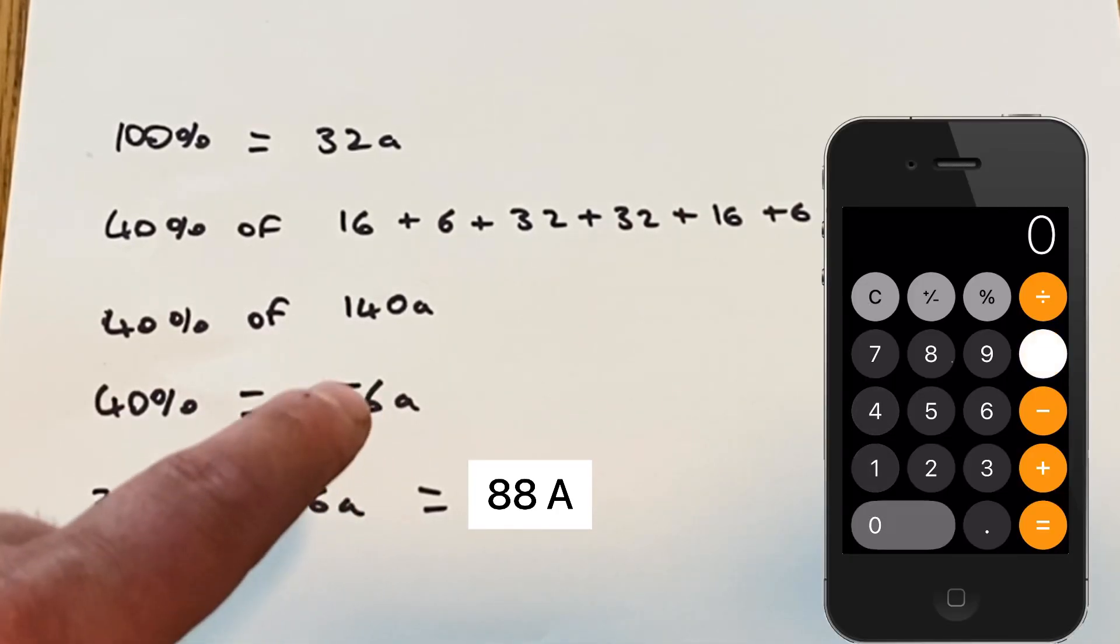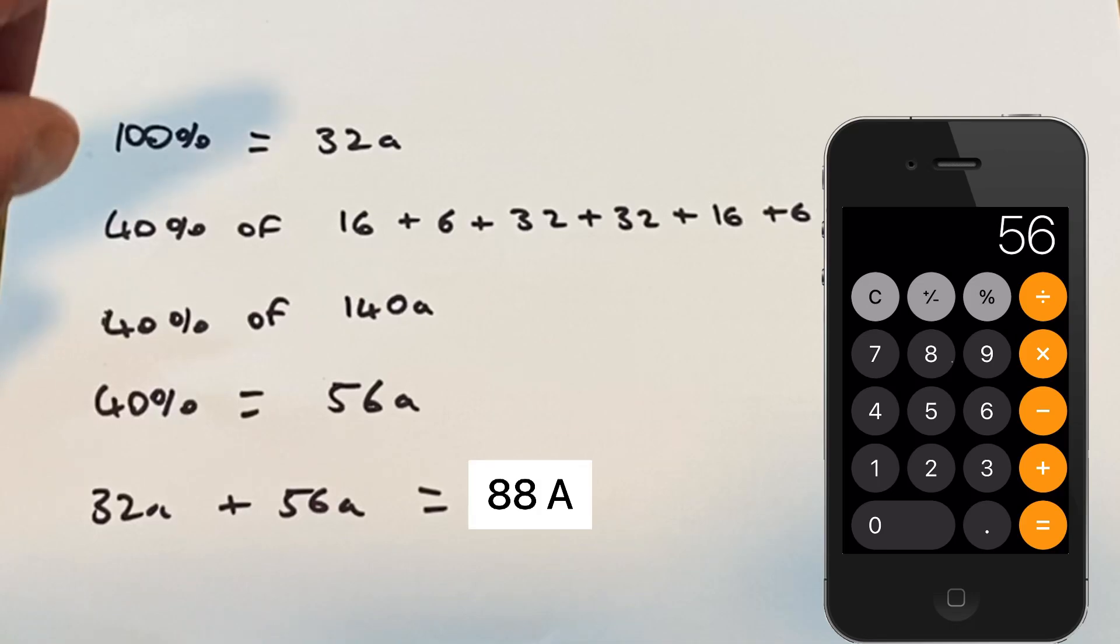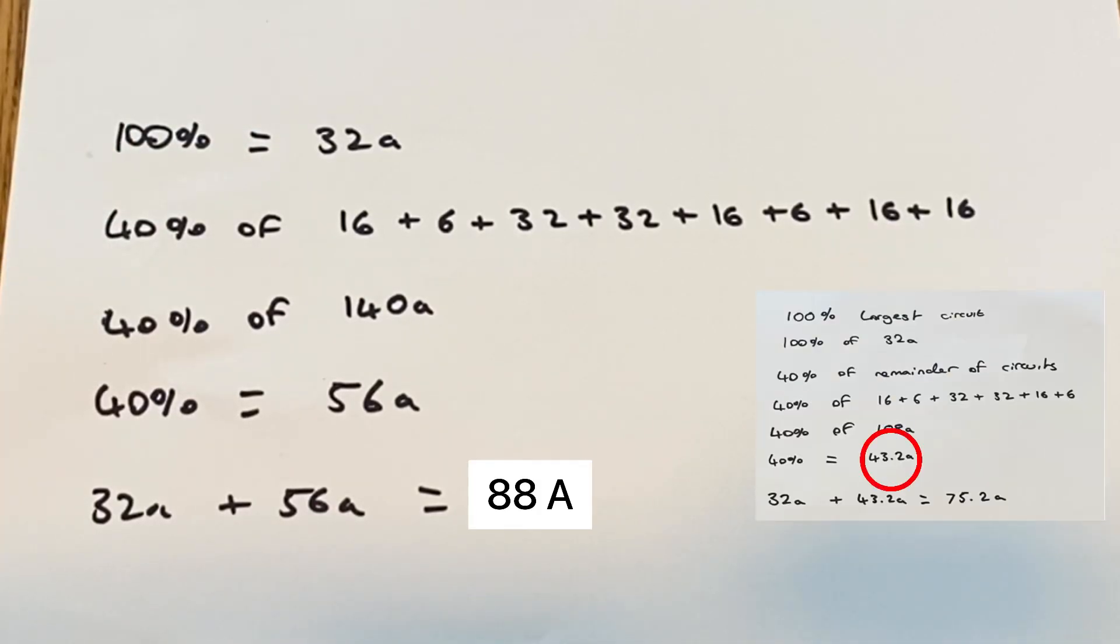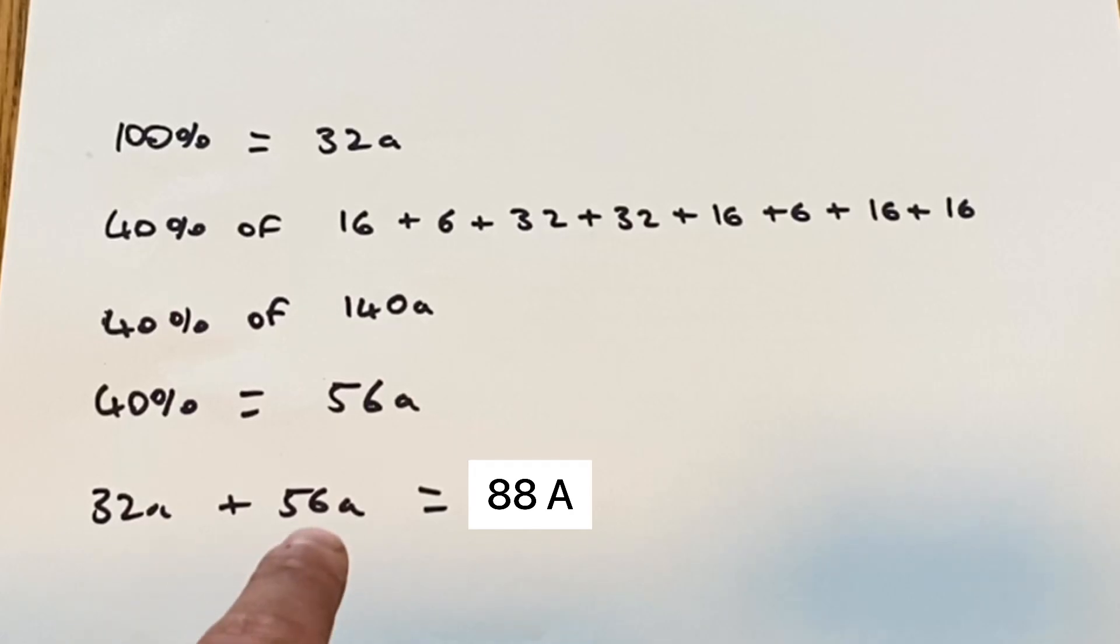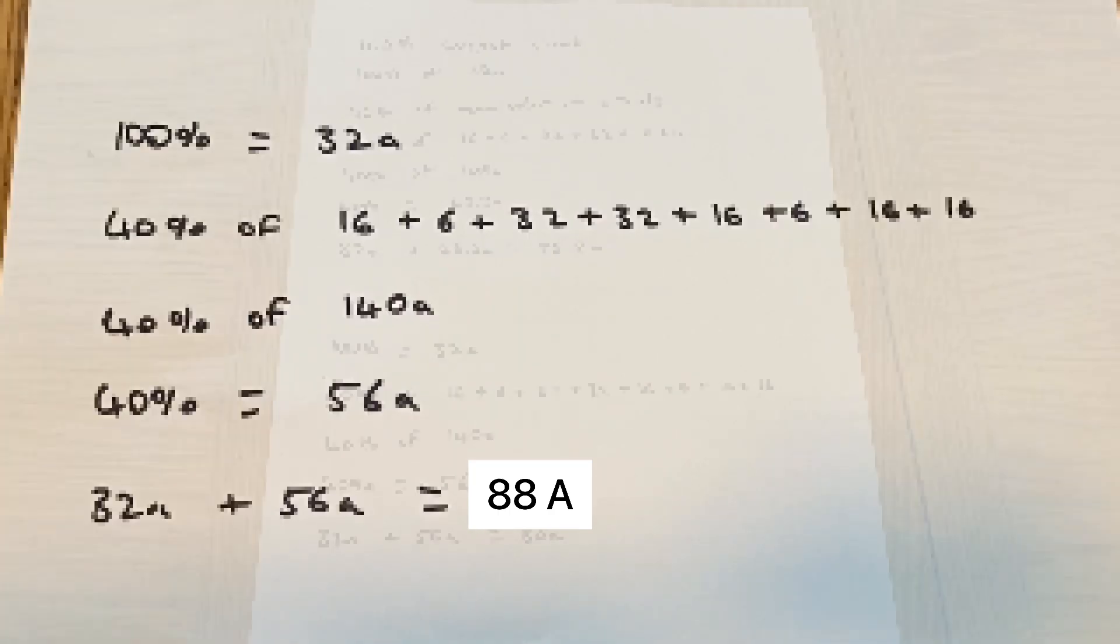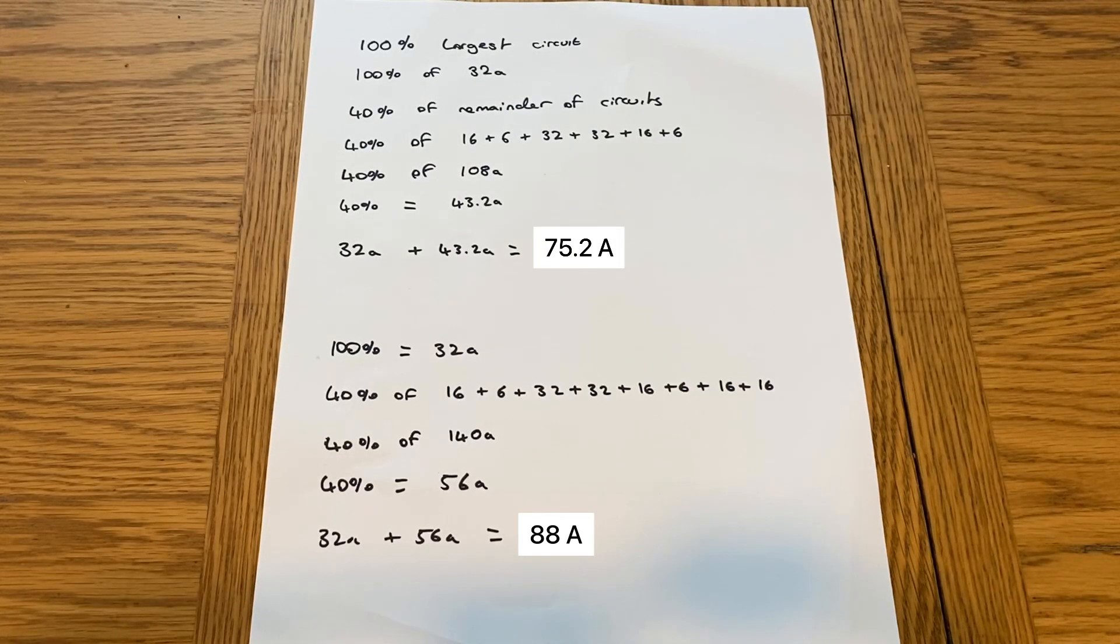We've added two circuits and you can see that it's actually increased from 43.2 to 56. So we add the 32 amps to the 56 amps which actually gives us a maximum demand including our diversity of 88 amps. As you can see it's a nice easy calculation, one you can really do on your phone while you're on site.